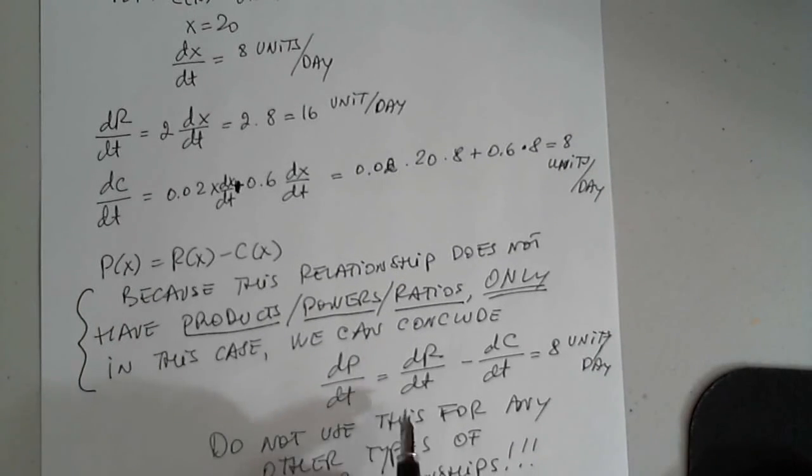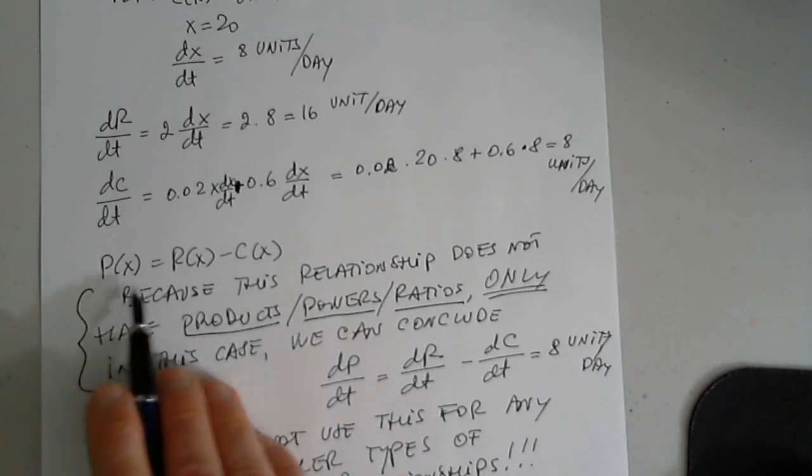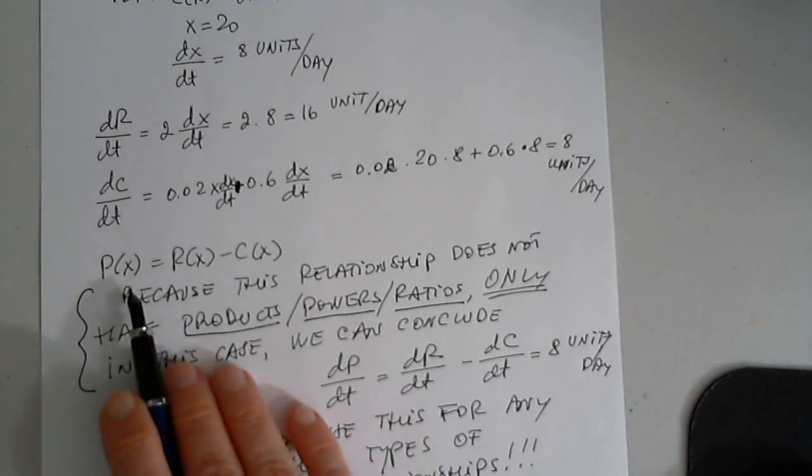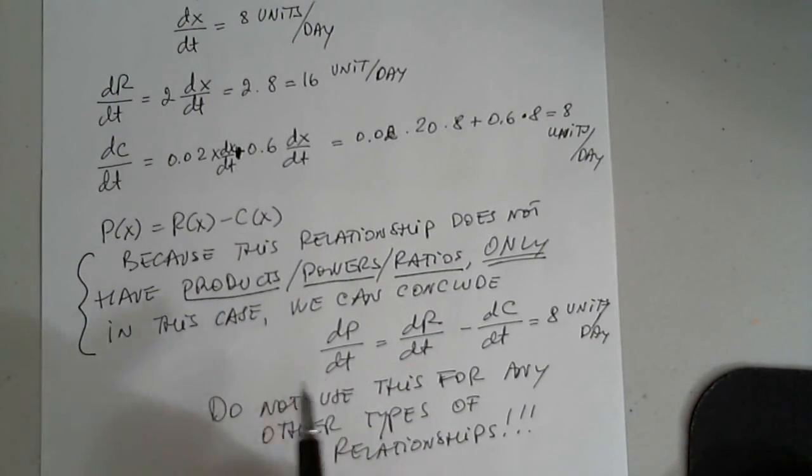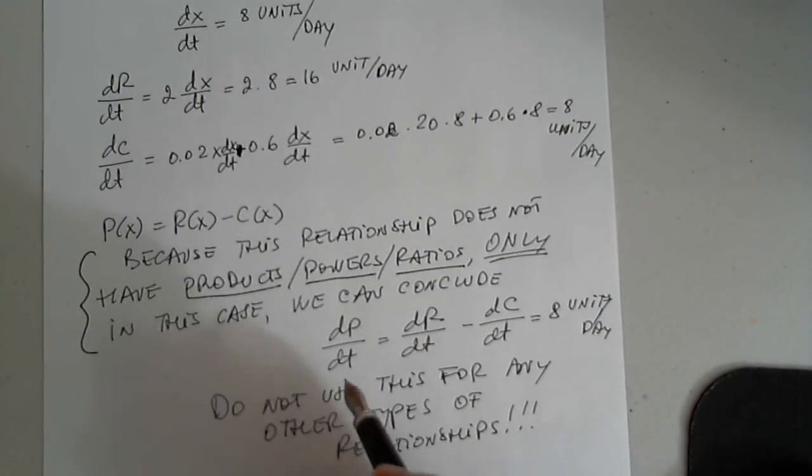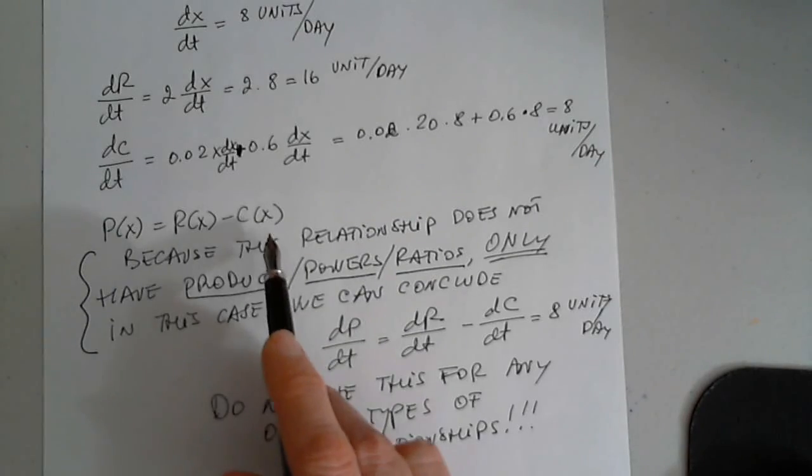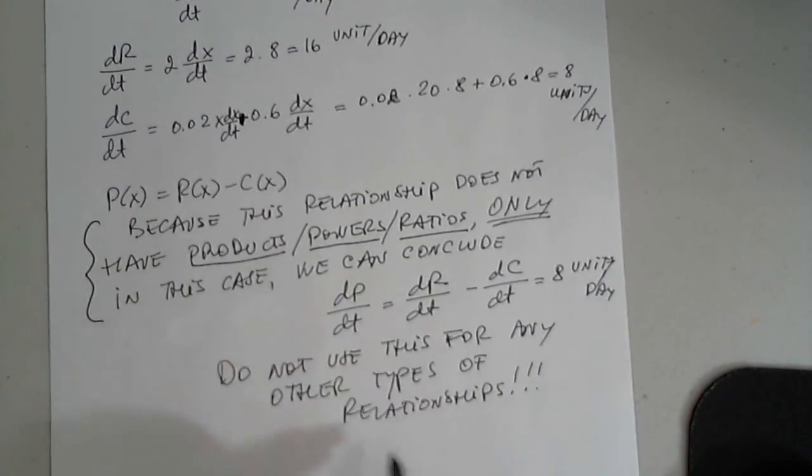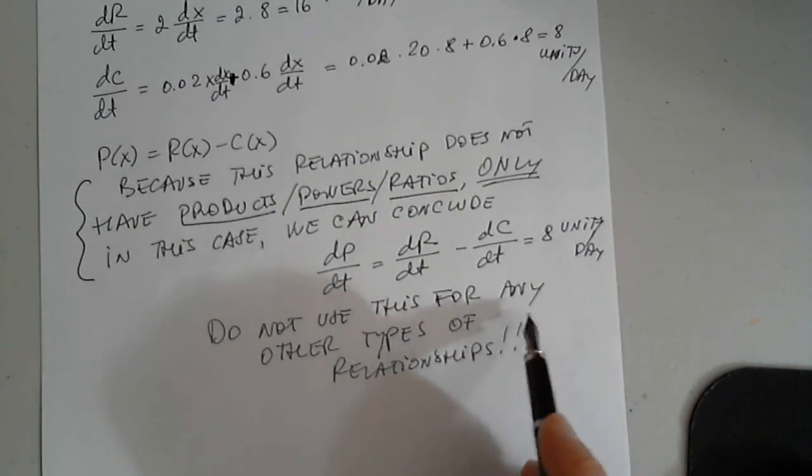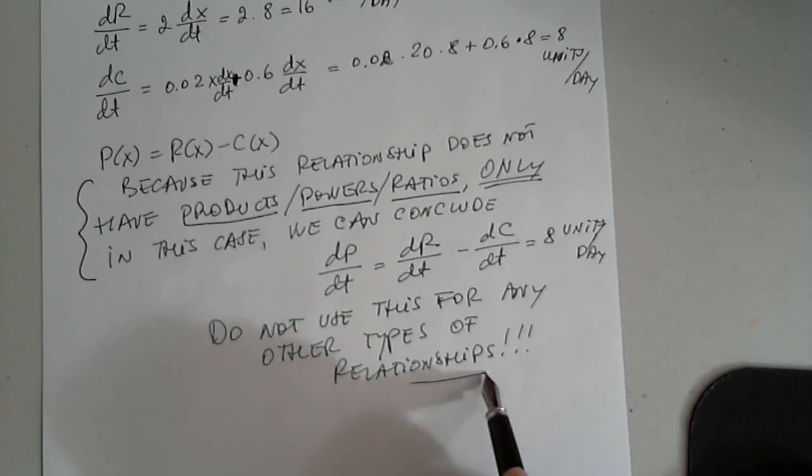Otherwise, we will not be able to conclude this. We would have to determine the function and start from scratch to find dp over dt. So be very careful. This is a specific situation in which we have a linear function. That's why this works. Do not use this for any other types of relationships. Careful. Thank you.